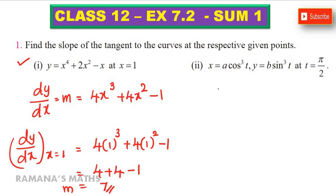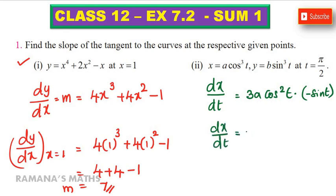Subdivision 2. Now dx by dt is equal to minus 3a cos square t into sin t.